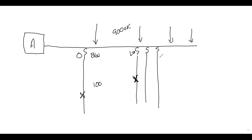Fuses are the most dominant line isolation device out there. We also fuse all our transformers. Think about it: if an animal gets up there, or the transformer gets struck by lightning and starts burning up — without a fuse — you'd take out the entire feeder circuit for the sake of one transformer. That's why we fuse all transformers.